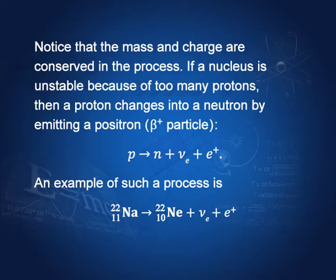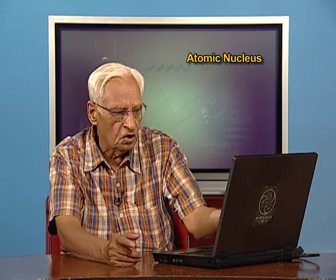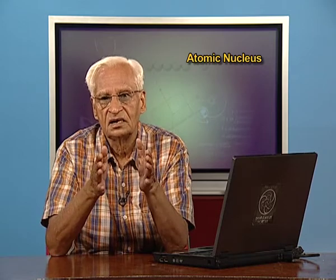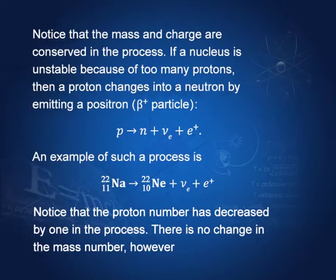When we say total mass, we mean mass-energy — Einstein's principle E = mc². So when we talk of mass, we are actually talking of total energy divided by c². An example: sodium-22 with atomic number 11 becomes neon-22 with atomic number 10, with the emission of a positron and a neutrino. The positron takes away one unit of charge, so 11 becomes 10, and the mass number 22 remains 22. Charge and mass are conserved.